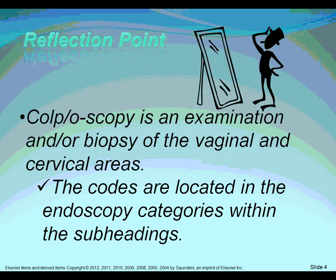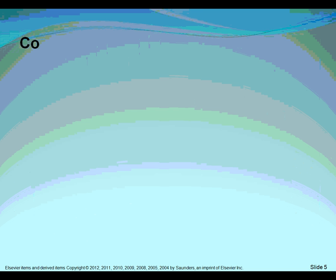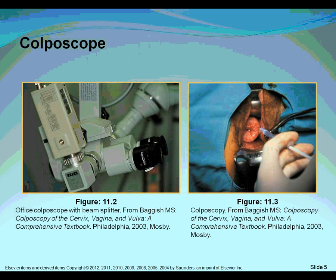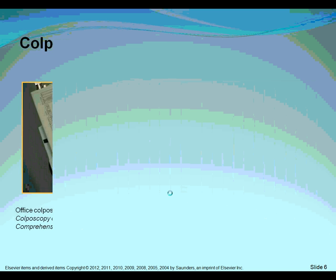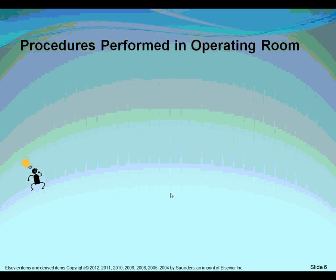Many procedures will use a scope and are considered endoscopic. 'Endo' means inner or innermost and 'scope' means to view. This particular device is specifically designed to view the vagina. A colposcopy is done in the office to see if there are lesions and to remove them for biopsy or later examination.